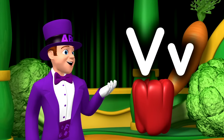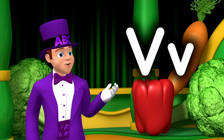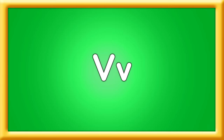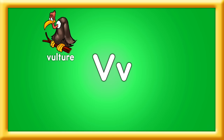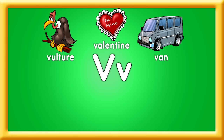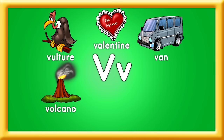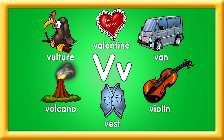Now there's a capital V and a lowercase v. These are words that start with V — sing them out so easily. Vulture, valentine, and a van. Volcano, vest, and violin. Vulture, valentine, and a van. Volcano, vest, and violin.